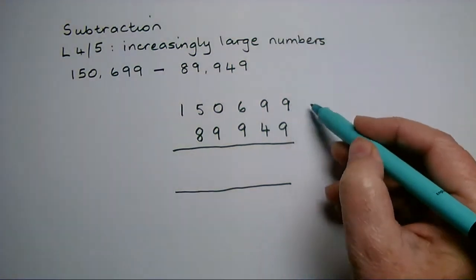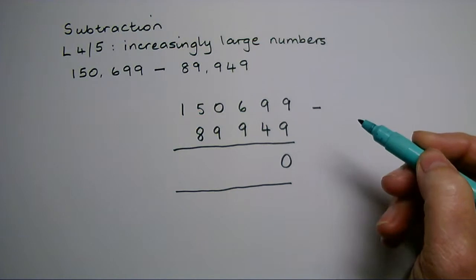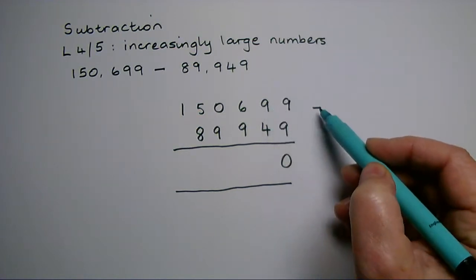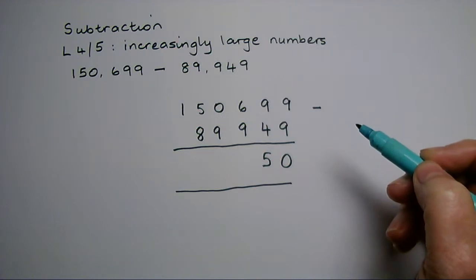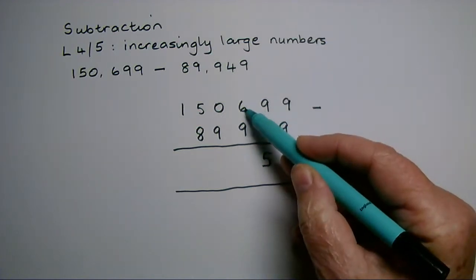Nine take away nine is nothing, no units. Nine tens take away four tens is five tens. Six hundreds take away nine hundreds—I can't do it, so I need to exchange.